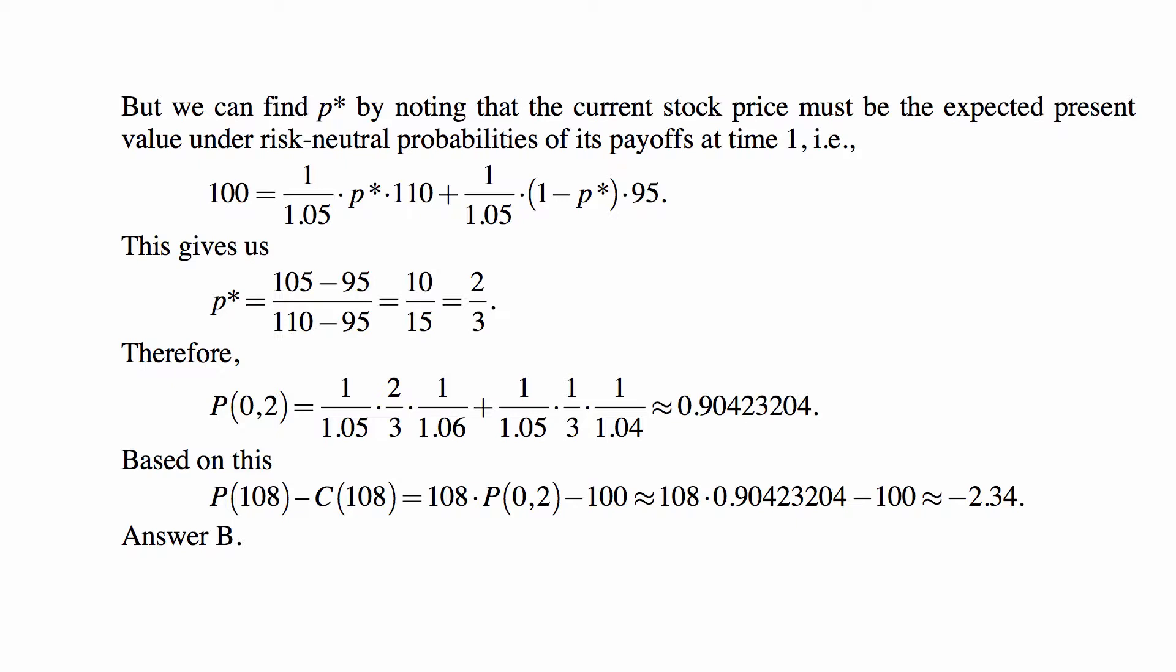plus 95, the value in the down state times probability of the down state, which is 1 - p*, discounted at 5% to time zero.